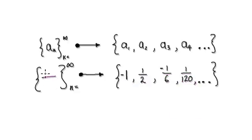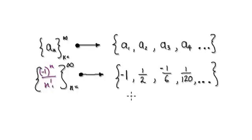So the formula for this sequence is (-1)^n divided by n!.